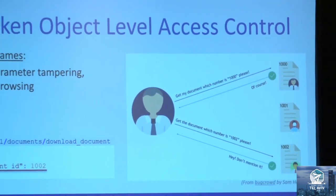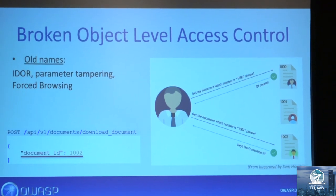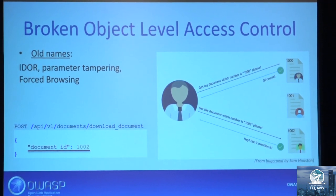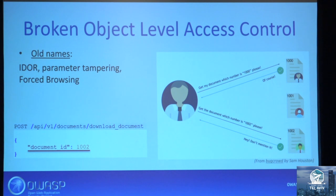Now let's talk about hunting for API vulnerabilities. The most common vulnerability today is Broken Object Level Access Control — you probably know it as IDOR. We decided to change the name for several reasons. It's a very simple vulnerability: it allows one user to access an object that should only be accessible to other users. For example, an endpoint to download a document contains a document ID parameter. A legitimate user asks for document 1002. If you change the document ID in the request, you can access documents belonging to other users. I find it in almost every API today.